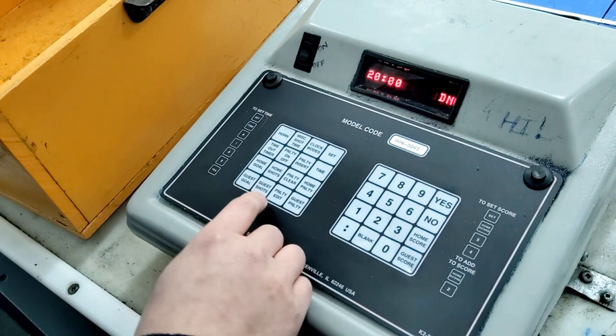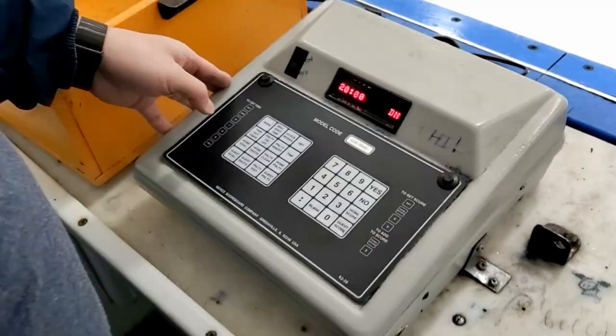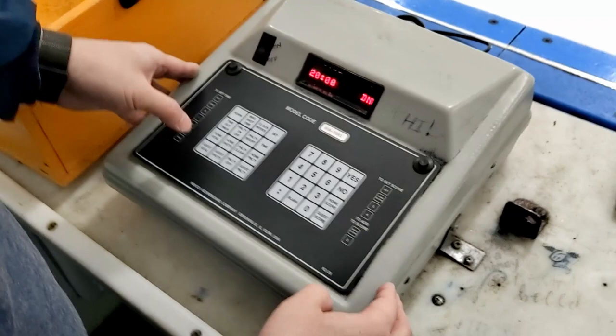To clear a penalty, if someone scored on the power play, you would click home penalty, clear penalty here, and then yes. It's gone now.